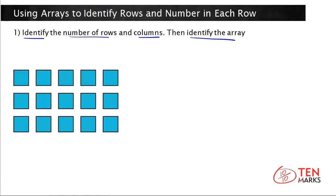Let's begin. How many rows are there? Rows go left to right, across the page in that direction, and there are one, two, three rows — I'm going to write that over here: three rows. Now let's count how many are in each row, or how many columns there are, and there are one, two, three, four, five columns — and I'm going to write that right here.